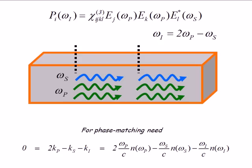I need 3kp - ks - ki = 0, where these are the wave vectors for the light - the frequency times the index of refraction at that frequency. Here's the condition.